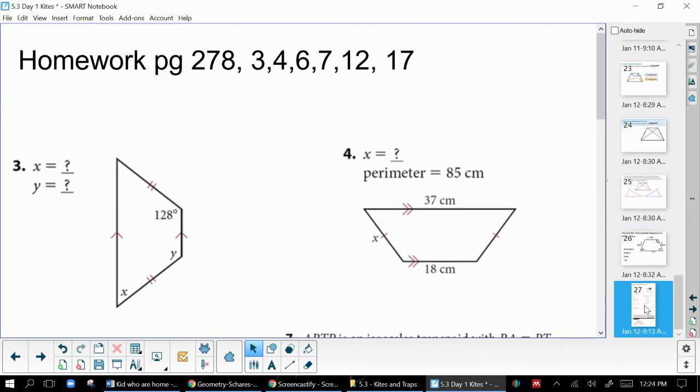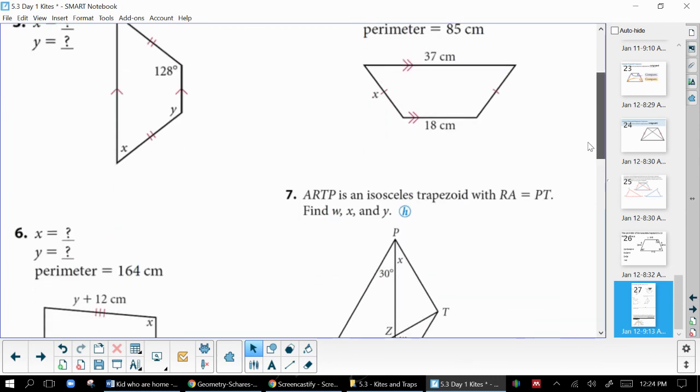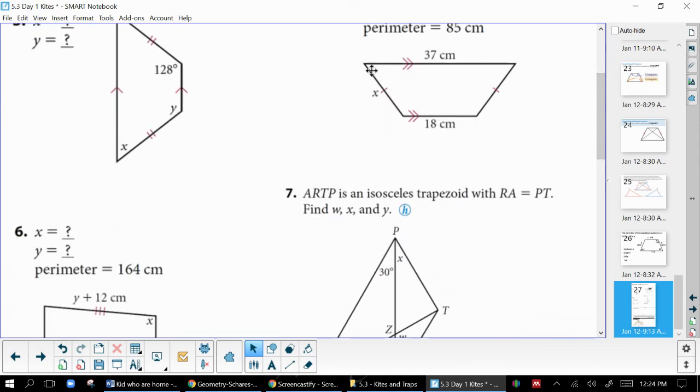So the homework or the practice for today is, again, pretty short. It's only six questions total. And so this is the exact same page as last time, just doing the questions about trapezoids now. Be careful on which ones are isosceles. If they're marked isosceles, then they're isosceles. If the question says it's isosceles, then it's isosceles.